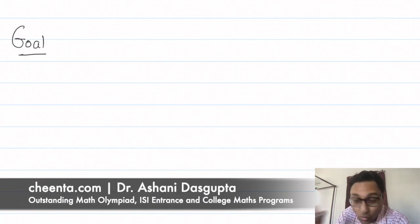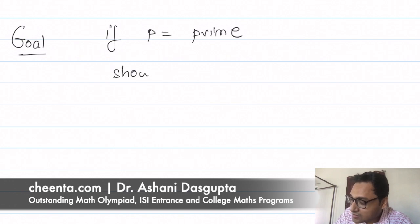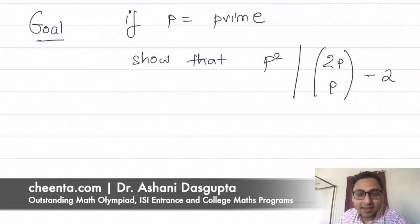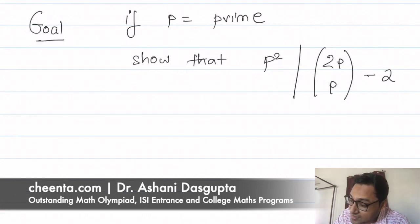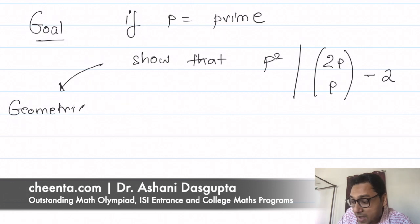We were working with this particular problem which had this goal: if p is a prime number, show that p² divides C(2p, p) minus 2. In the previous video we showed how to translate this number theory problem into a geometric pattern.